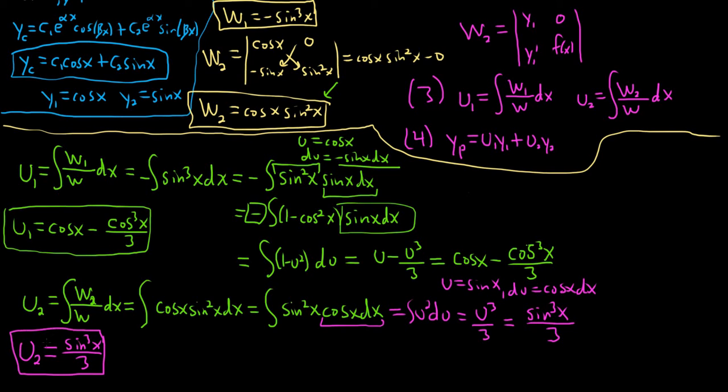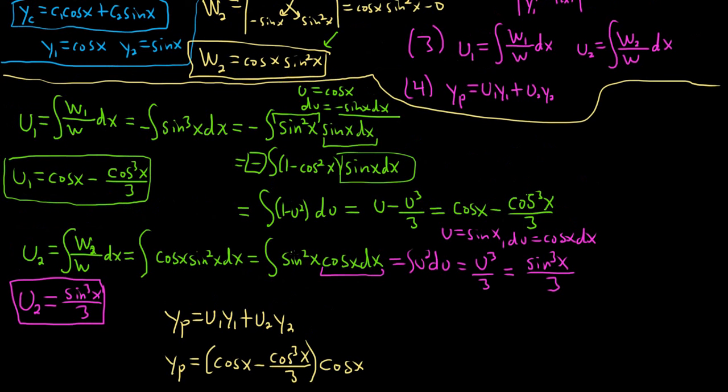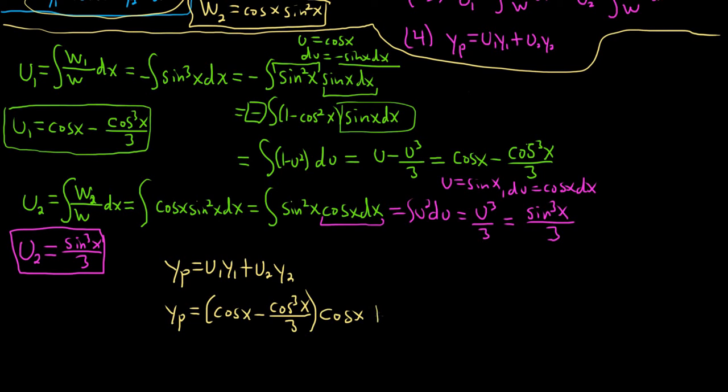All right. Good stuff. So now we have the u's, and that's the hard part. The rest of it is not so bad. So yp is u1y1 plus u2y2. So yp is, u1 was the cosine x minus cosine cubed x over 3 times y1, which is cosine x. And then plus u2, which is sine cubed x over 3, times y2 which is sine x. I'm lost without the boxes.